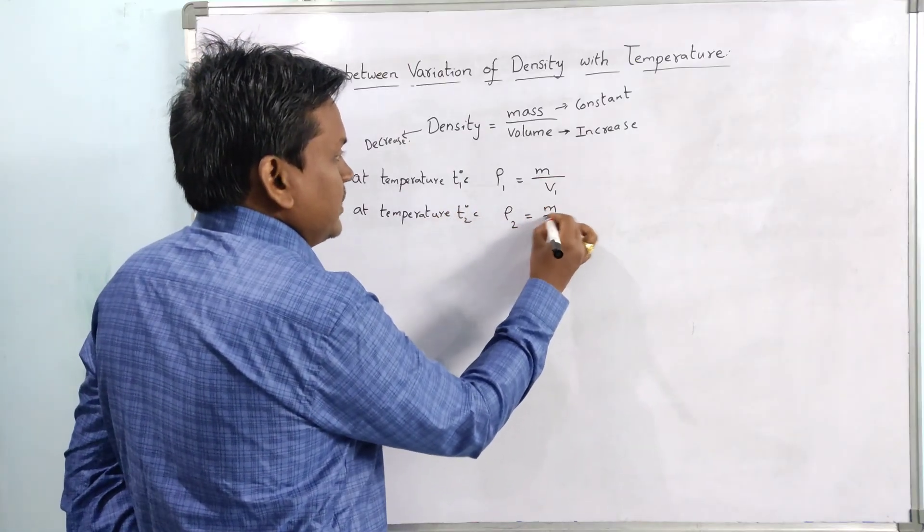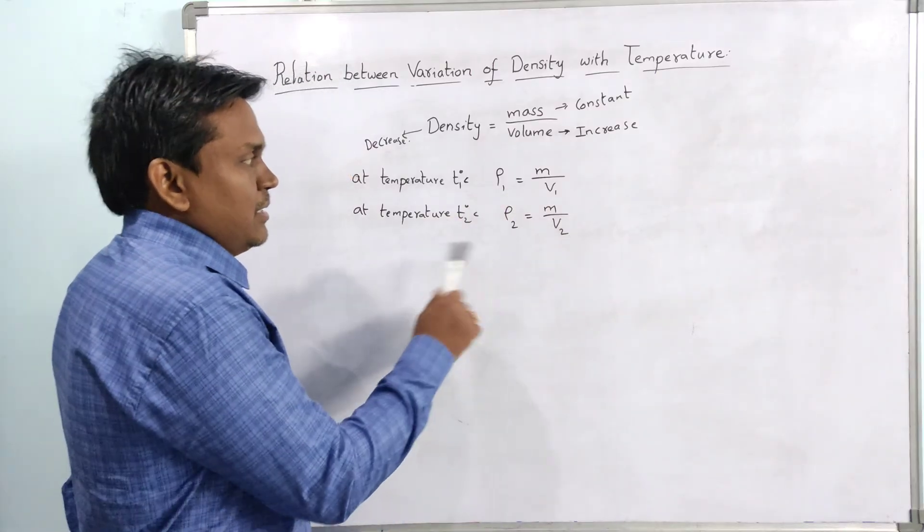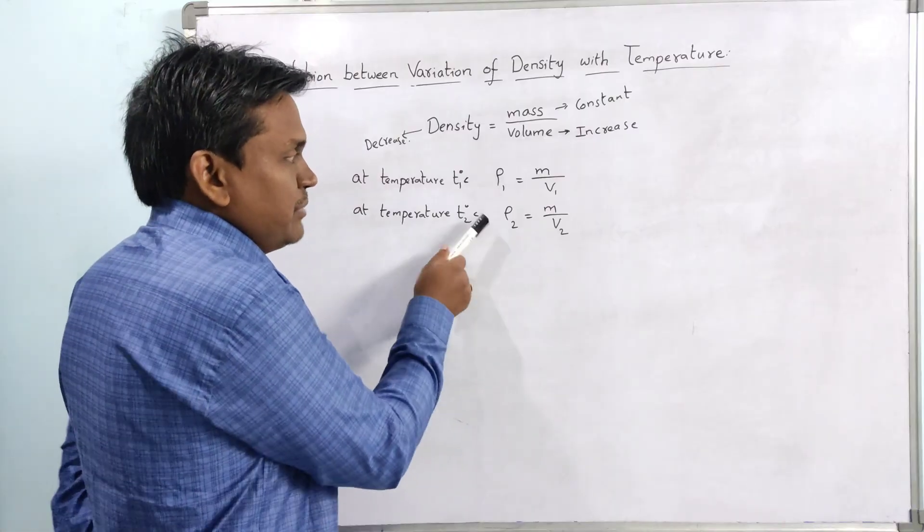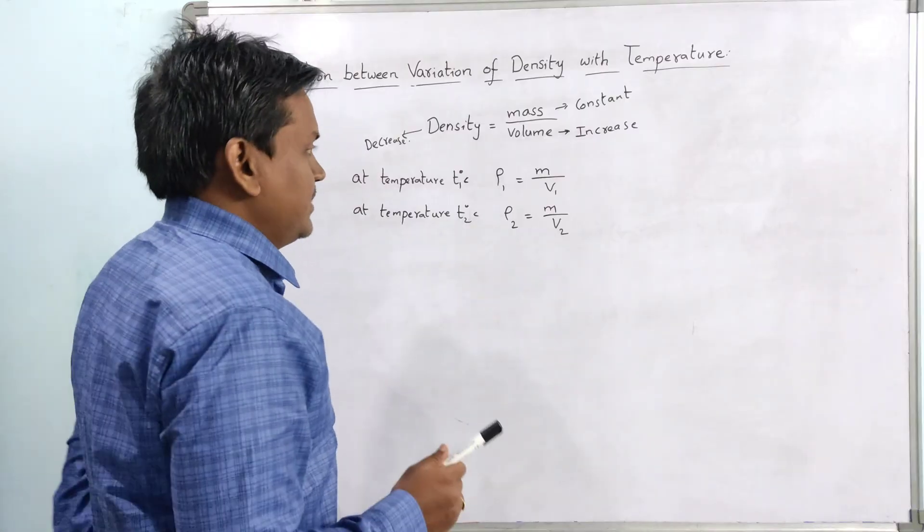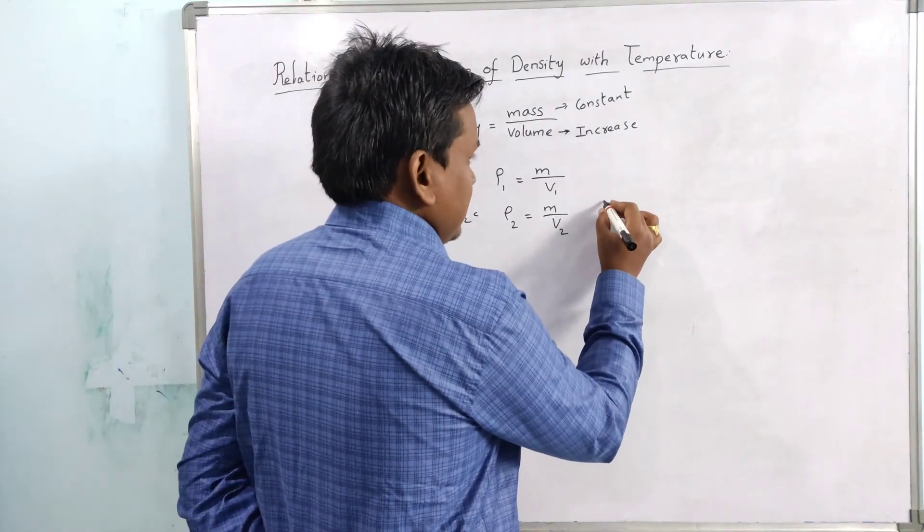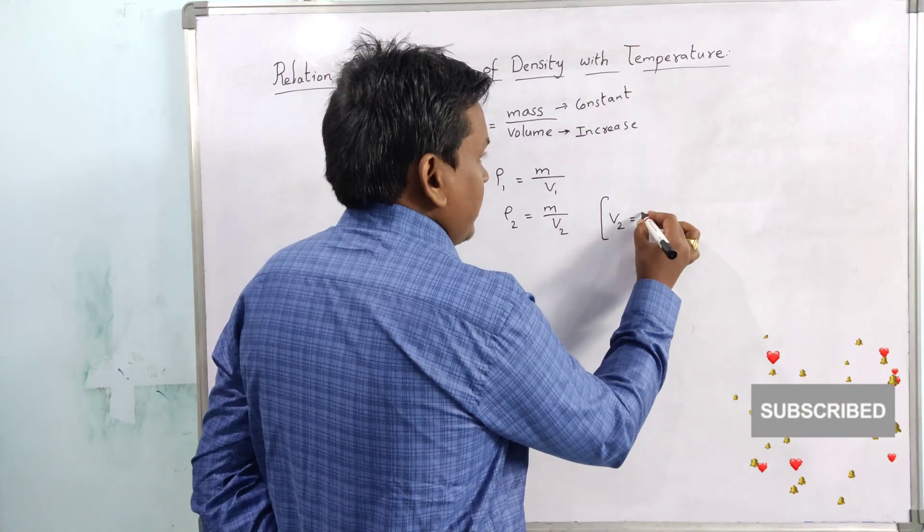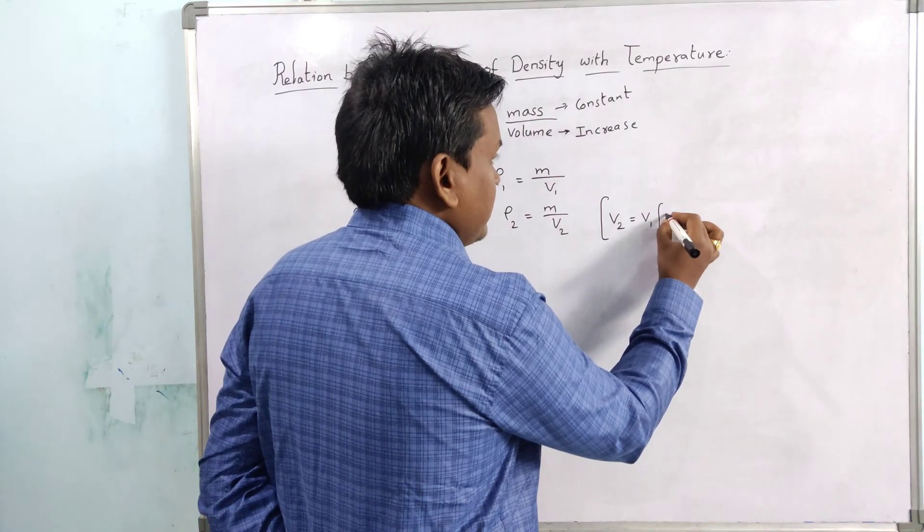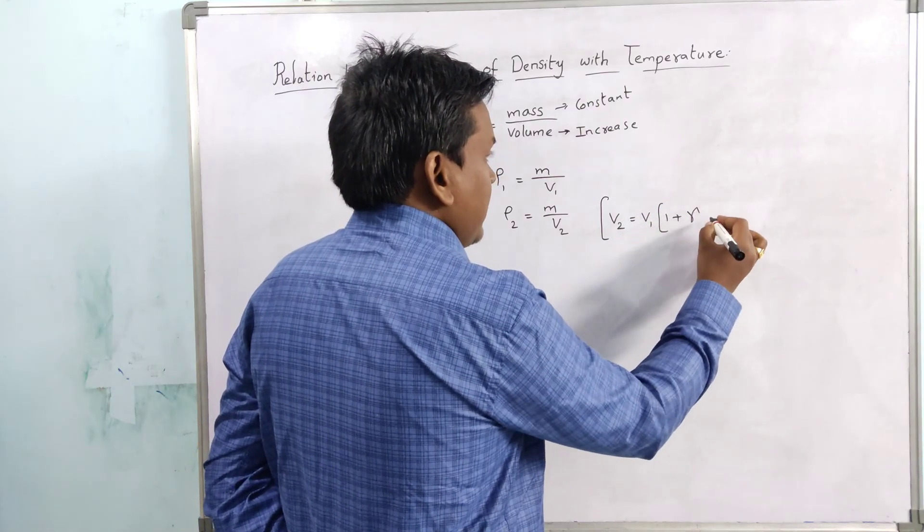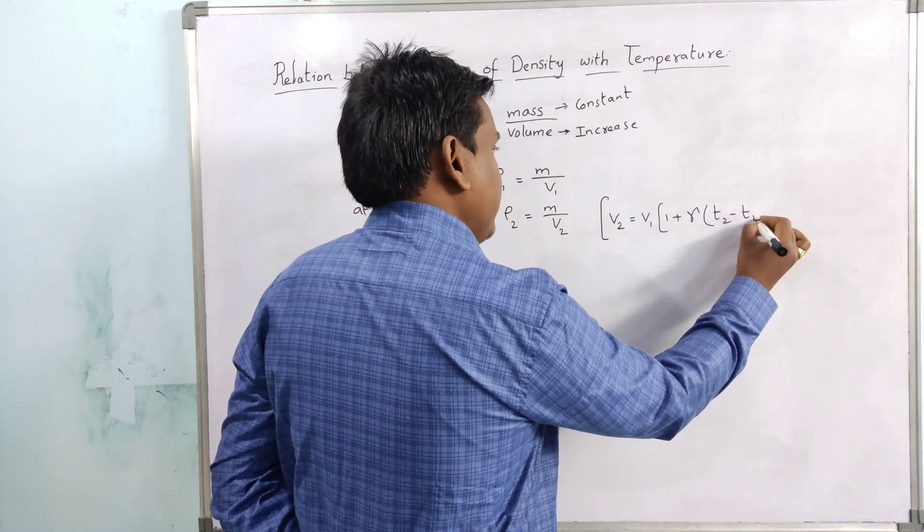We know that change in volume v2 equal to original volume v1 into 1 plus gamma into T2 minus T1. This is coefficient of volume expansion.